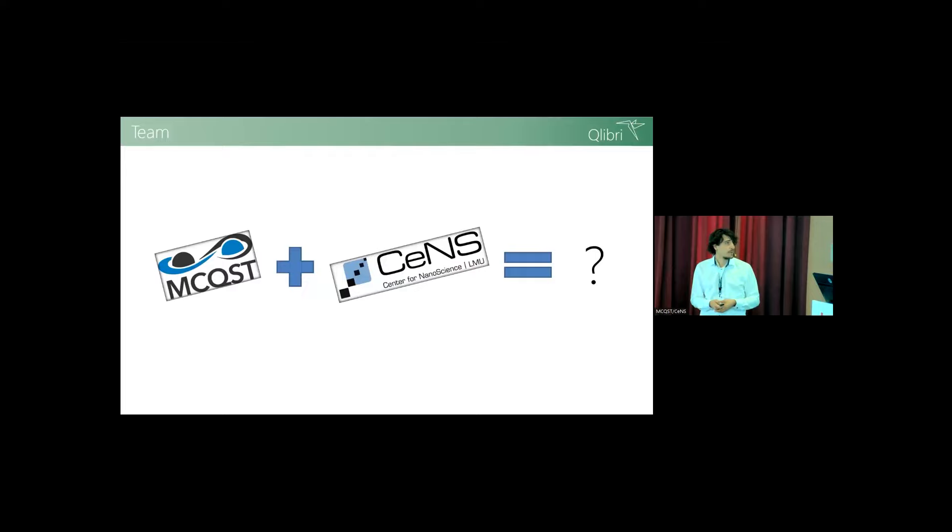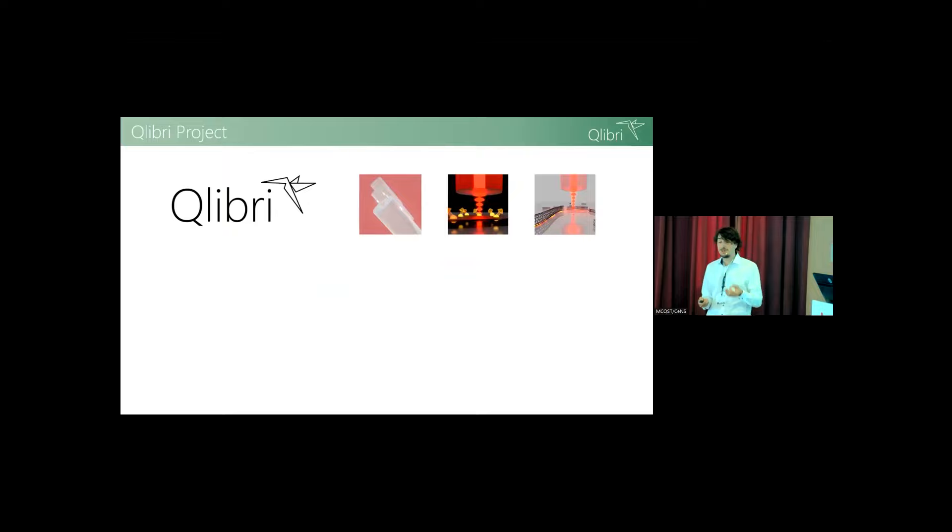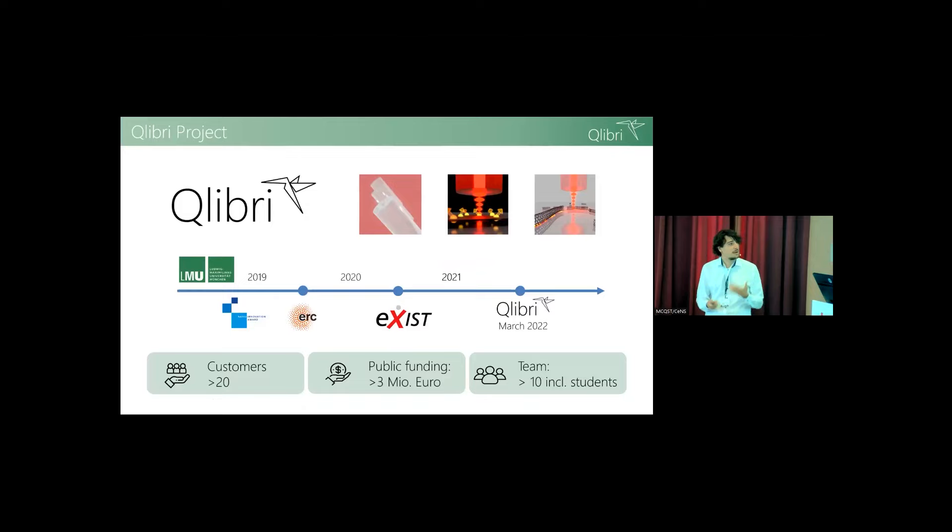Now what happens if you combine MCQST and Sense? It's either a very unpronounceable word, really good for Scrabble, or you could ask Qlibri, which is also a really good word for Scrabble. With our microscope, we have three products already: micro mirrors, quantum optics platform, and the microscope. Quick recap: how we profit from this ecosystem in Munich. We originated from LMU, got the kickstart. Everything was then probably the Sense Innovation Award we got. The URC approved concept funding, the EXIST Fashion Transfer. There was a lot of help from the LMU, and then finally started the company this March.